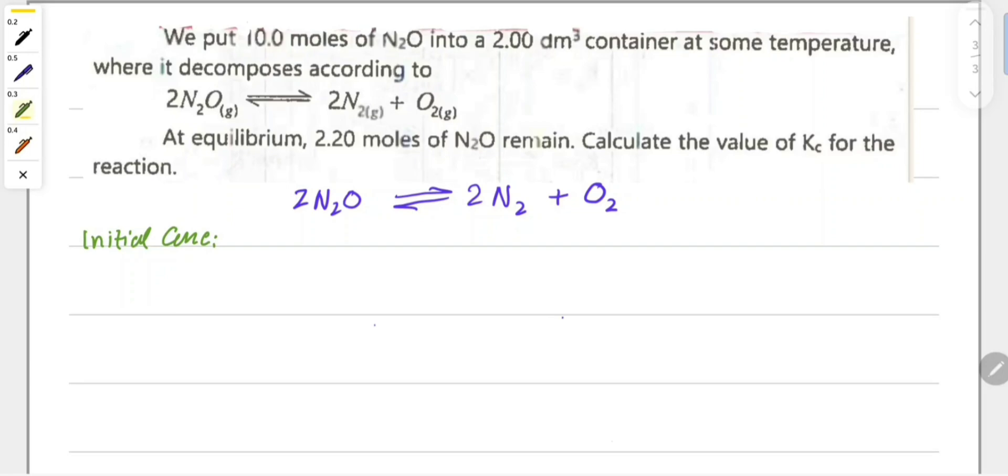Initial concentration: moles of N2O equals given moles divided by volume. The square bracket represents molar concentration. Moles are 10 and volume is 2 cubic decimeters or 2 liters, so we got 5 molar. This is the initial concentration of dinitrogen oxide.